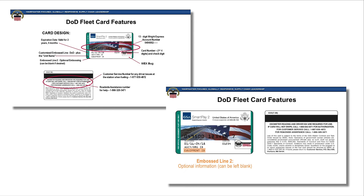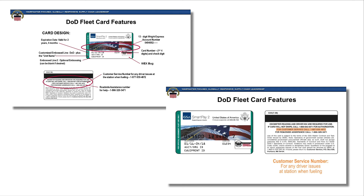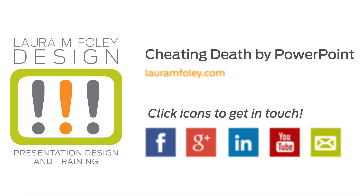Let's compare the before and after. In the upper left-hand corner is the original slide — it's very busy, the visuals are small, and there's a ton to look at. In the redesign, you can see it animating now. It's very clear, the visuals are gigantic so you can see what the card looks like, and you can see each feature of the card one step at a time.